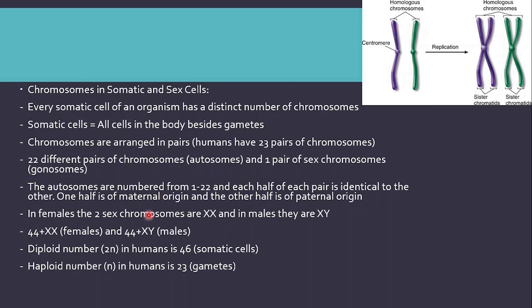In females, the sex chromosomes are XX, and in males they are XY. Therefore, a female has 44 chromosomes and an XX chromosome, which makes them female. Males have 44 chromosomes, one X chromosome, and one Y chromosome, which makes them male.